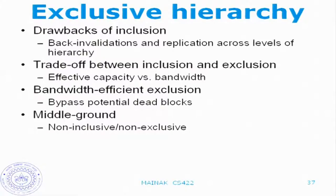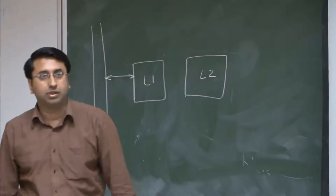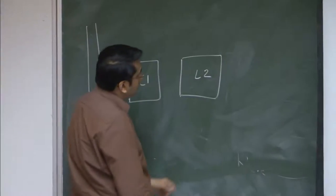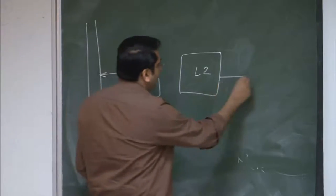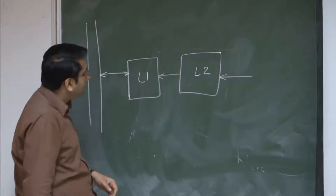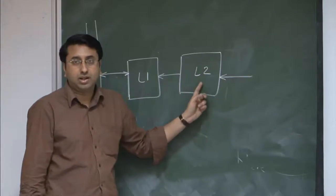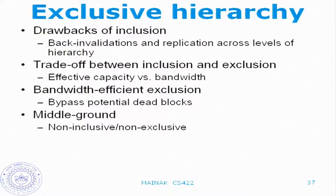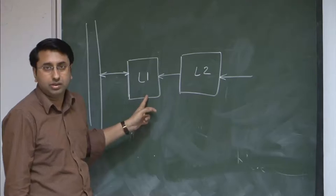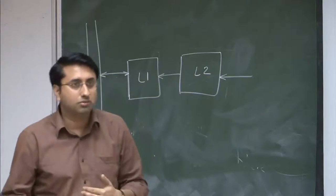There is a middle ground that processors often take, called non-inclusive, non-exclusive. The idea is that your L1 is not a subset of L2, but it is not also exclusive. What happens is that when you bring a block from memory, you fill it to L2 and fill it to L1 both. But when you evict something from L2, you don't invalidate the block from L1. So essentially you are removing the back invalidation problem. You still have a window where blocks are duplicated across the levels, but when you evict from L2, you don't notify L1, and this is where the subset property gets violated.